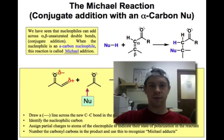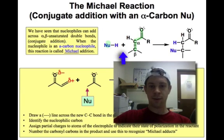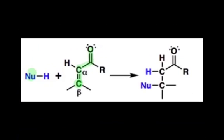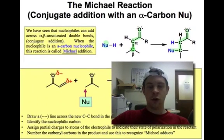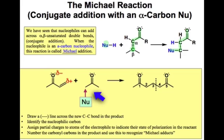In a previous lesson, we learned about alpha-beta unsaturated ketones and the fact that nucleophiles are able to add to the alpha-beta unsaturated ketone at the beta position in a conjugate addition type process to generate products such as the one shown here. In this lesson, we studied reactions of nucleophilic carbonyl derivatives, and in this webcast, we're going to combine these two ideas and discuss the addition of enolates to alpha-beta unsaturated ketones, a process known as the Michael reaction.